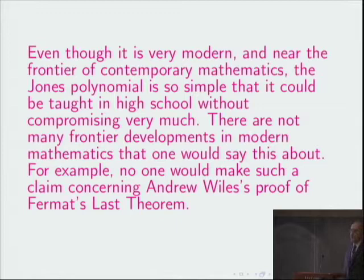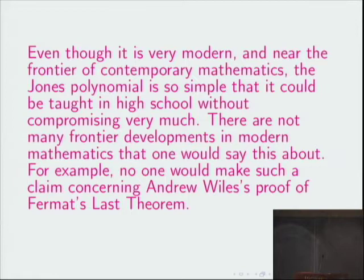There are not many things at the frontiers of modern mathematics where one would say that. For instance, nobody would claim that you could explain Andrew Wiles' proof of Fermat's Last Theorem to high school students. Not even close. Not even the concepts that he used, or the tools or techniques. It's layer upon layer. The proof of Fermat's Last Theorem is many layers removed from what you could explain to high school students. But the Jones polynomial, even though it is near the frontiers of modern mathematics, is also so elementary that you actually can explain it to high school students.